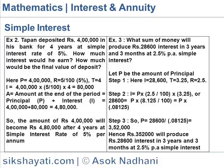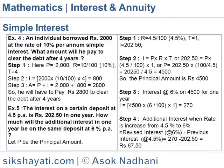So Rs.3,52,000 will produce Rs.28,600 interest in 3 years 3 months at 2.5% per annum Simple Interest.